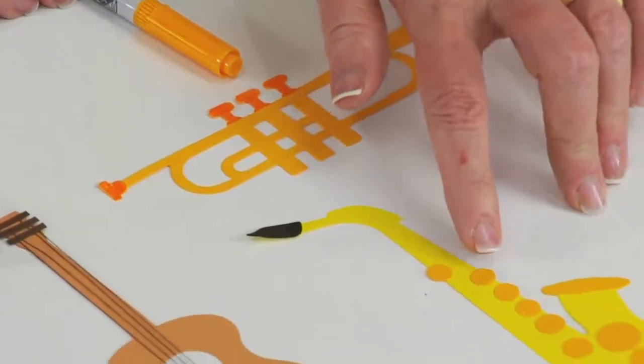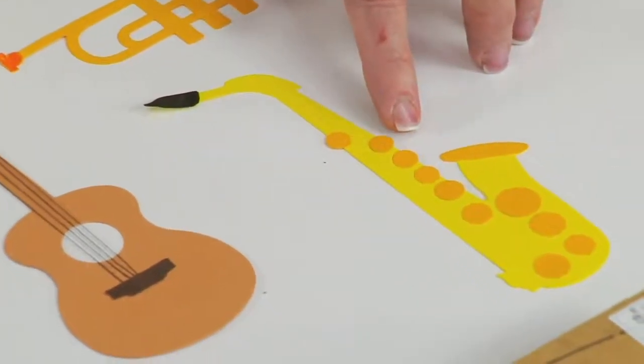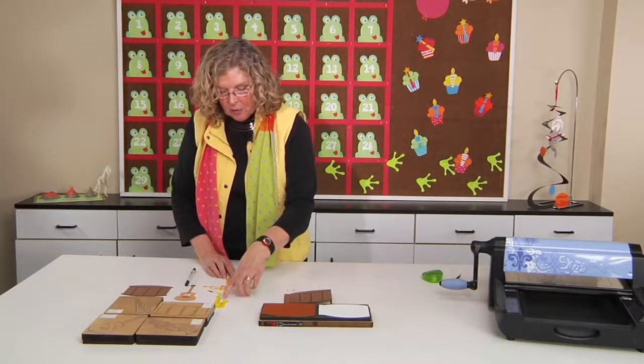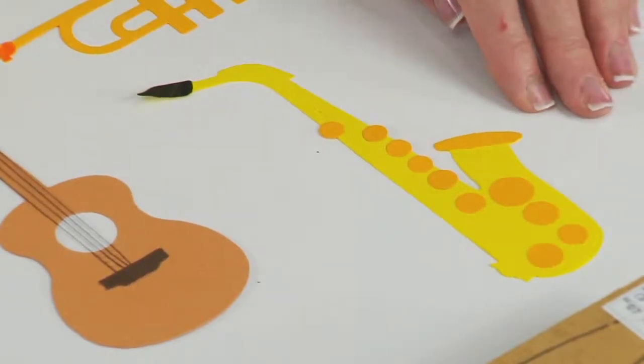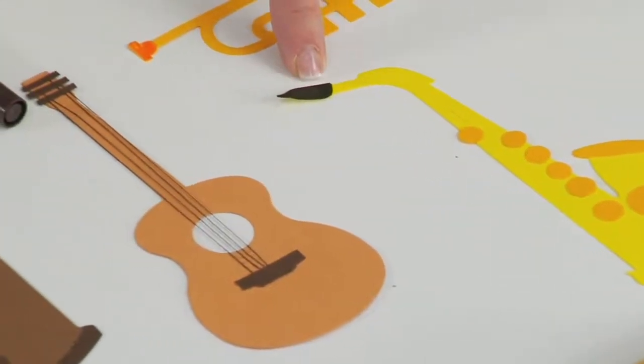For the saxophone, I punched holes in different sizes, circles in different sizes, in order to put them where the valves would go and there's perforations that indicate their placement underneath. I used a marking pen to actually color the reed section.